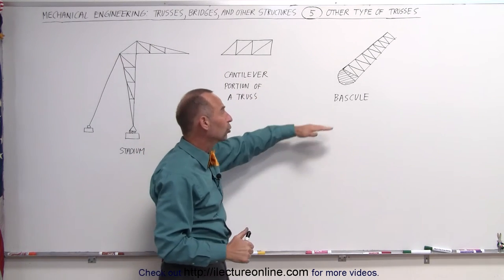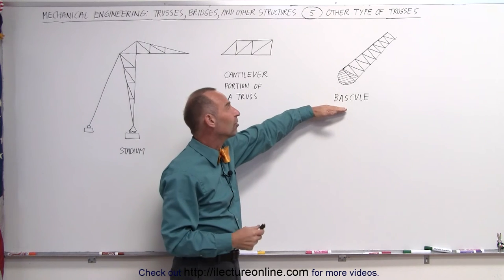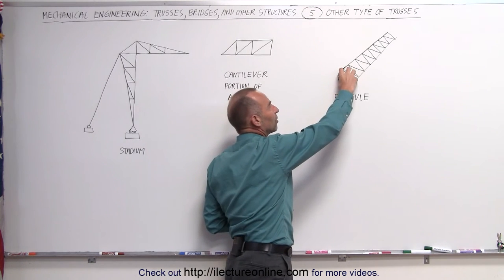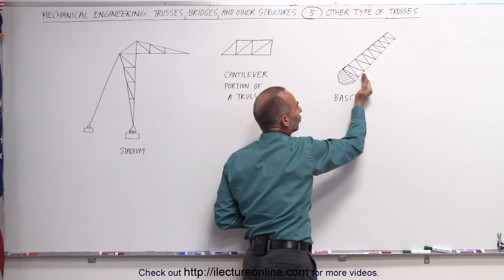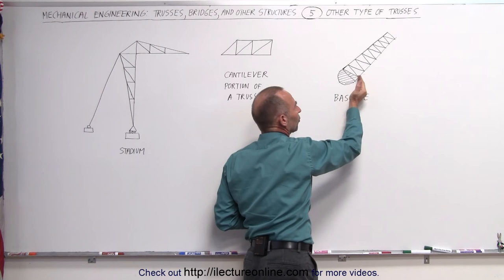And then we have something called the bascule. This is from a French design. Notice we have a very large ballast at the bottom supporting the weight, with the center of mass close to one edge right here.